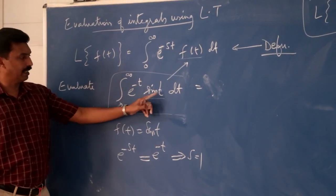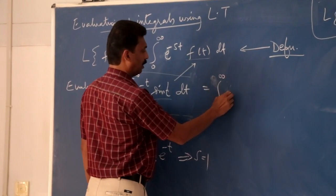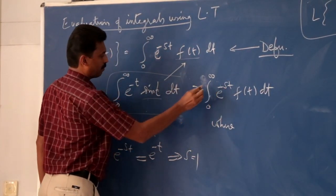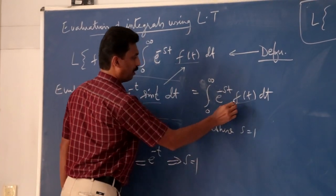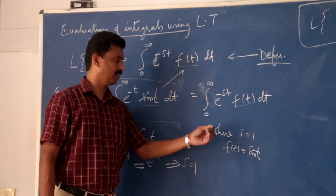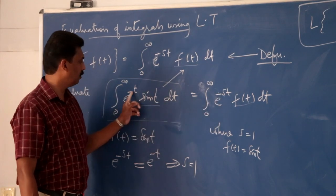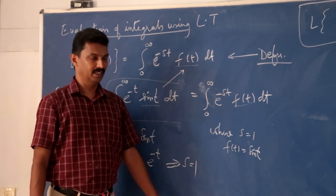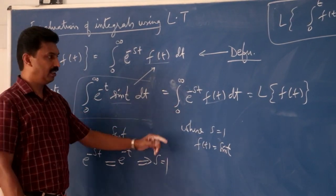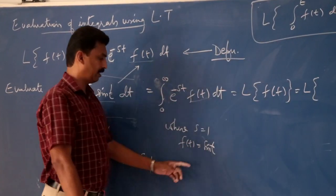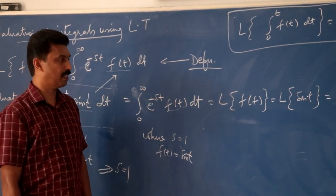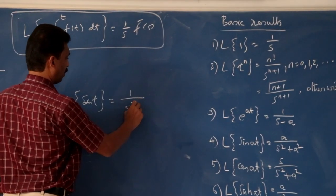The integral from 0 to infinity of e^(−t)·sin t dt equals the integral from 0 to infinity of e^(−st)·f(t) dt, where s is replaced by 1 and f(t) is replaced by sin t. This equals the Laplace transform of sin t, which by the standard formula is 1 divided by s² + 1.